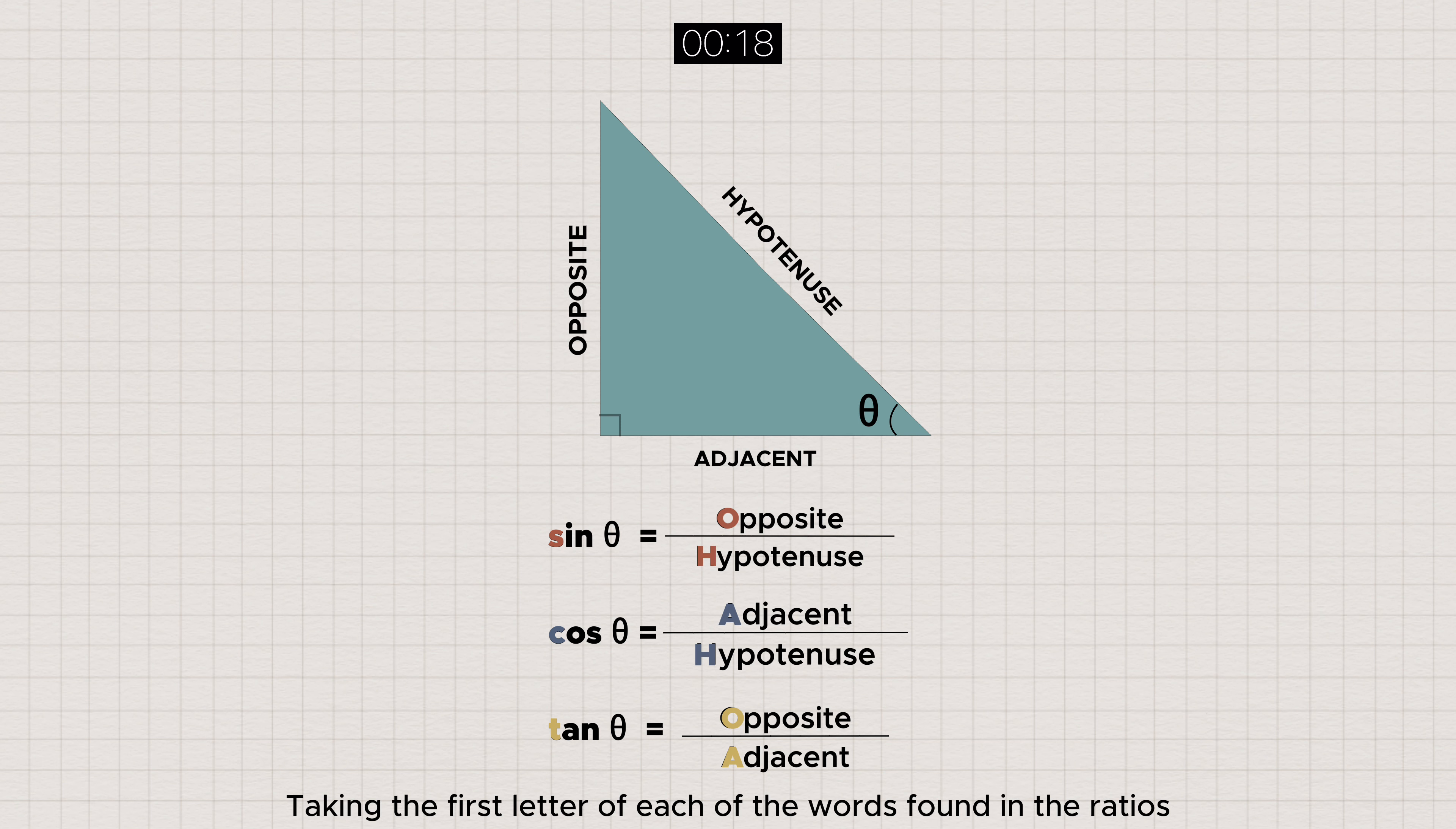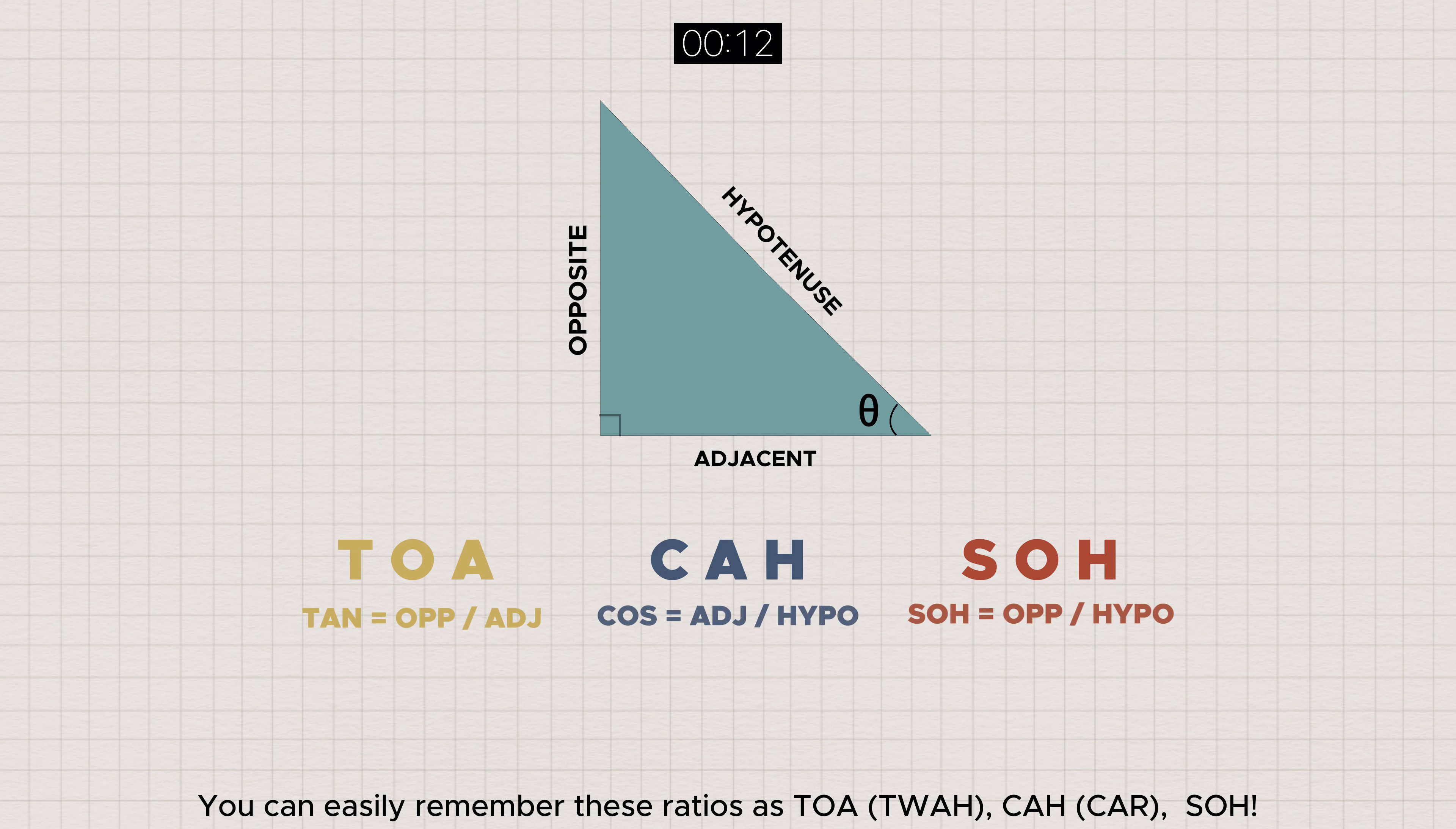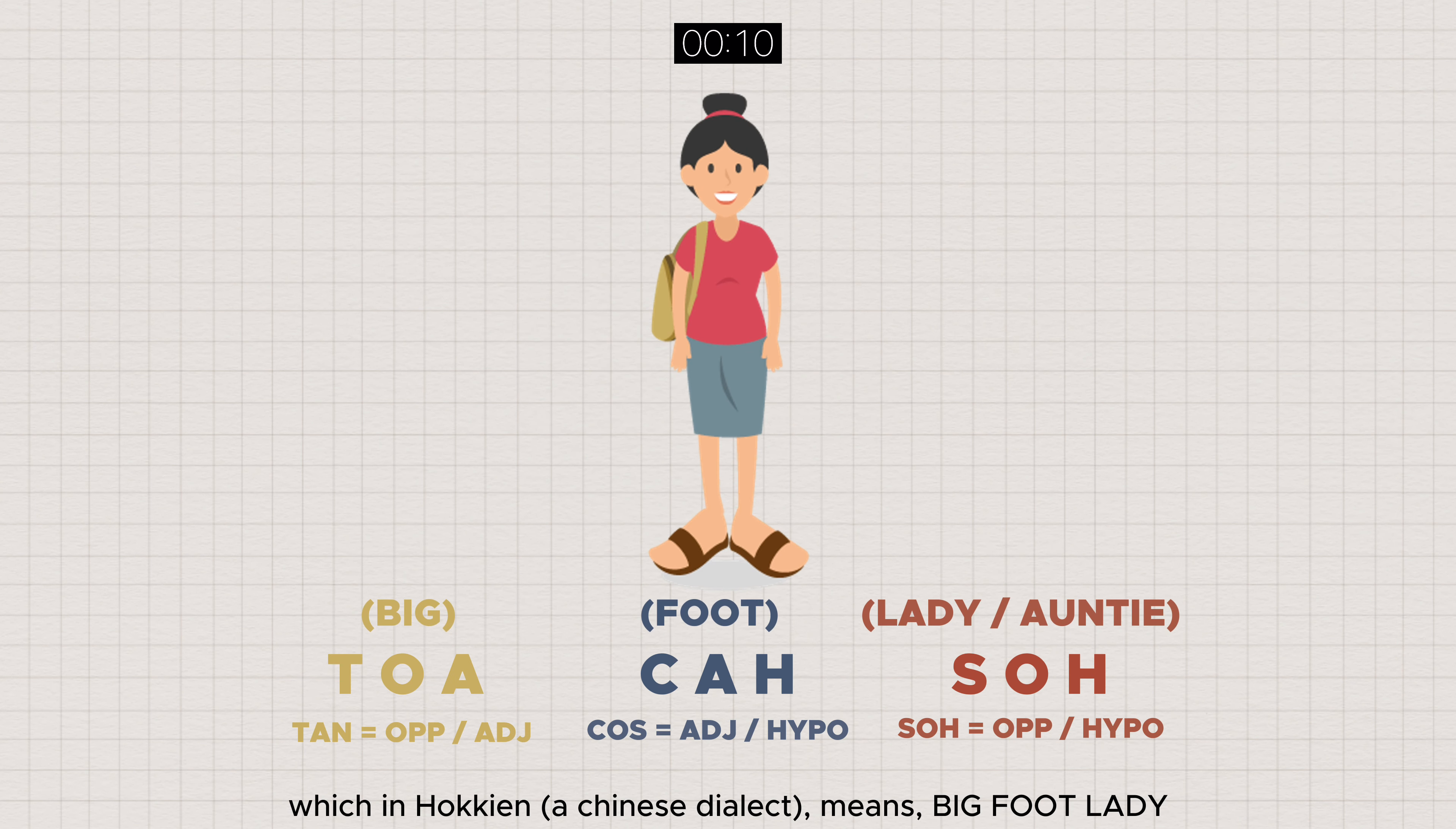Taking the first letter of each of the words found in the ratios and putting them together, you can easily remember these ratios as TOA, CAH, SOH, which in Hokkien means Bigfoot Lady.